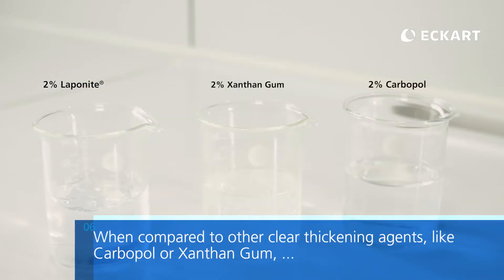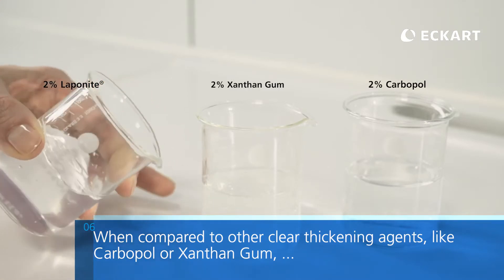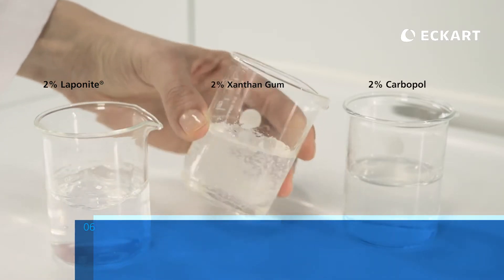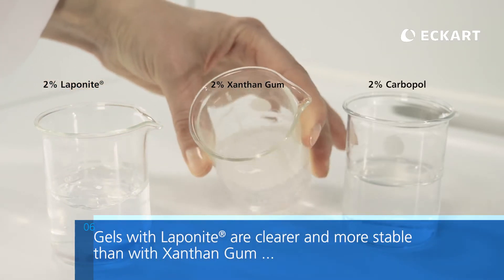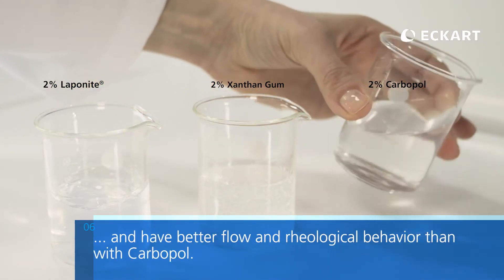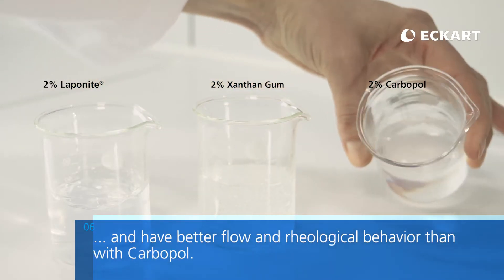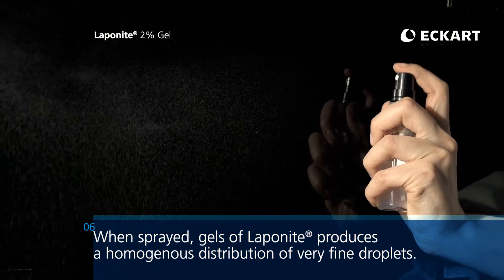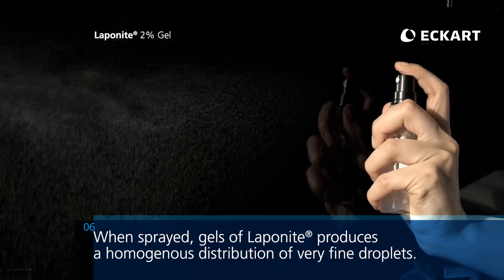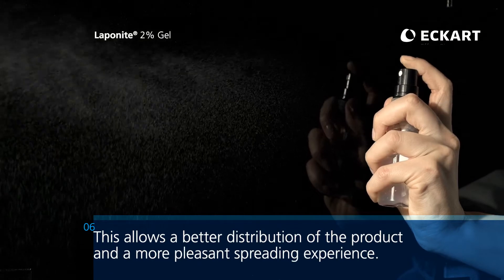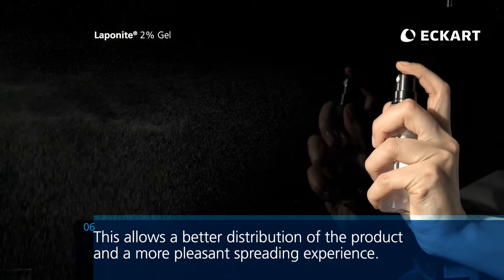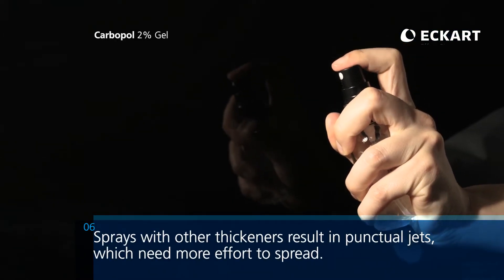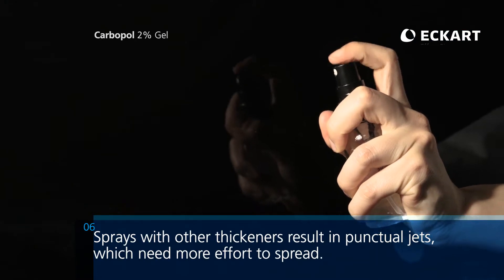When compared to other clear thickening agents like Carbopol or xanthan gum, Lapinite offers clear advantages. Gels with Lapinite are clearer and more stable than with xanthan gum and have better flow and rheological behavior than with Carbopol. When sprayed, gels of Lapinite produce a homogenous distribution of very fine droplets. This allows a better distribution of the product and a more pleasant spreading experience. Sprays with other thickeners result in punctual jets, which need more effort to spread.